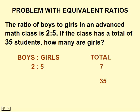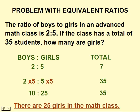Now, we'll jump right to what we want, a total of 35. What do we need to multiply 7 by to get 35? So we'll do that to both the left and right side of our ratio. In this case, we need to multiply both the left and right side by 5, giving us an equivalent ratio of 10 boys to 25 girls. And you see that adds up nicely to 35. So our answer is there are 25 girls in the advanced math class.